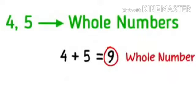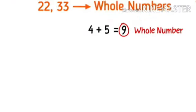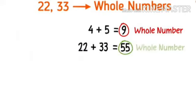9 is also a whole number. Even the numbers 22 and 33 are whole numbers. What is 22 plus 33? You're correct. It's 55. And 55 is also a whole number.